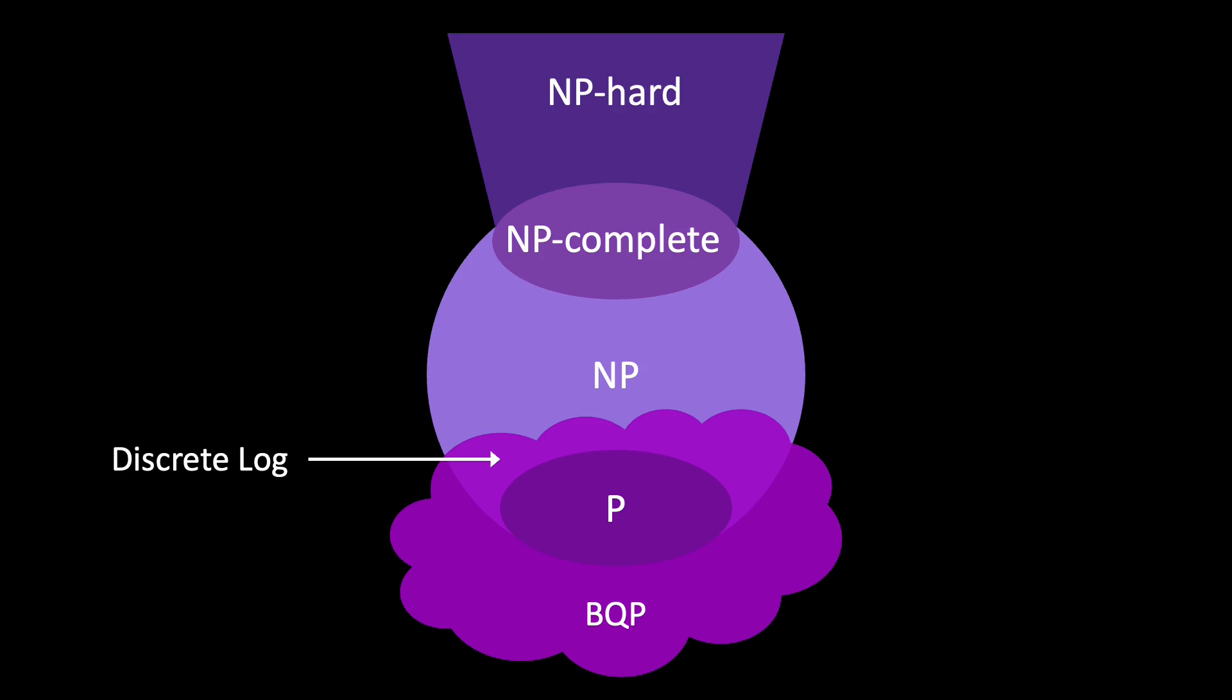The discrete logarithm problem is an example. The forrelation problem is in BQP, but not in NP. But we don't know if all problems in NP are also in BQP.